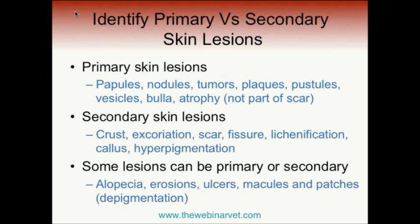Some lesions can be primary or secondary. Alopecia is a classic example — self-trauma can lead to secondary alopecia, yet in some primary alopecia diseases it's a really important primary lesion. The way we sort that out is clinically: when did these lesions show up in the course of disease? Did they show up early, without self-trauma? These clues help us determine whether it's a primary or secondary lesion.